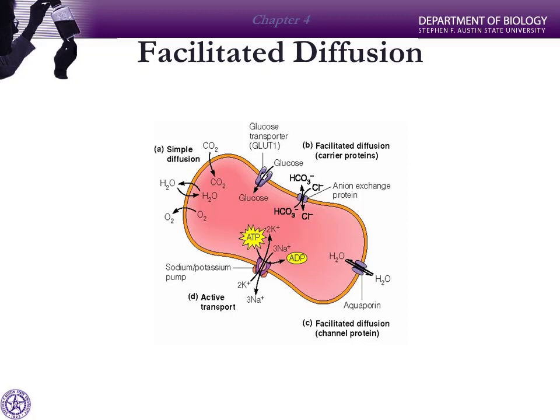The distinction between simple and facilitated diffusion: neither requires energy. Simple diffusion requires only a gradient — other than a gradient, nothing else is needed to help. Facilitated diffusion needs a protein transporter — either a carrier or a channel — that simple diffusion doesn't require.